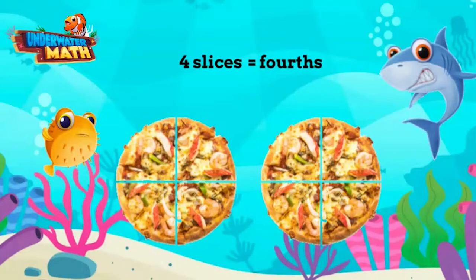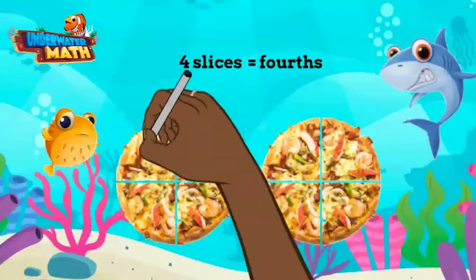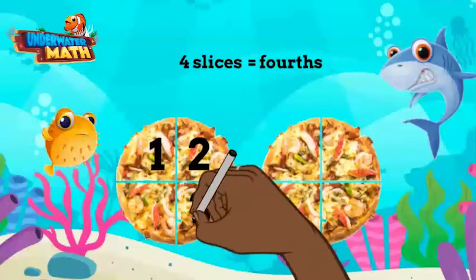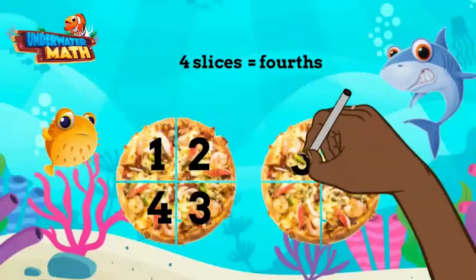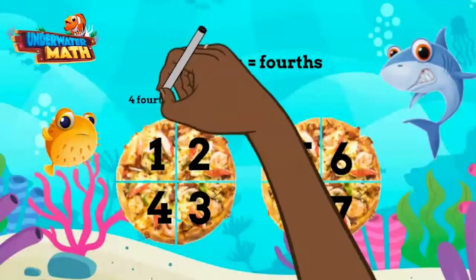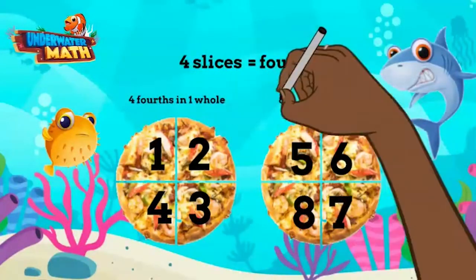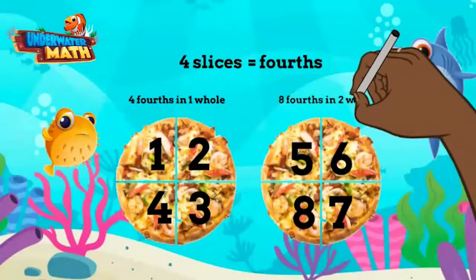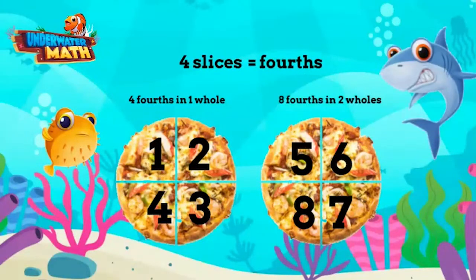Let's count to see how many fourths we have in total: one, two, three, four, five, six, seven, eight. We have eight fourths in total. If four fourths make up one whole, then eight fourths make up two whole pizzas.